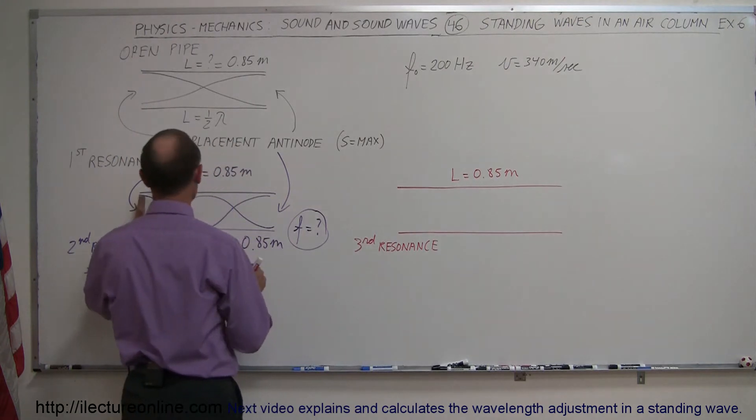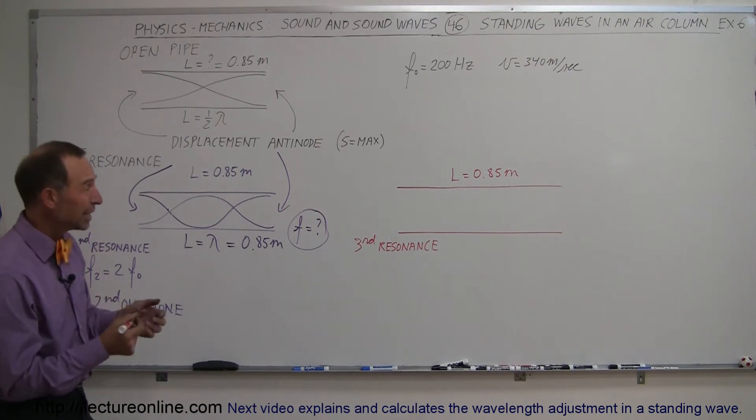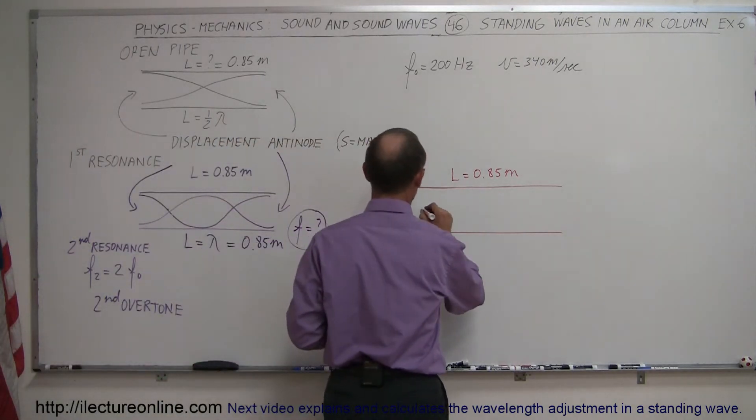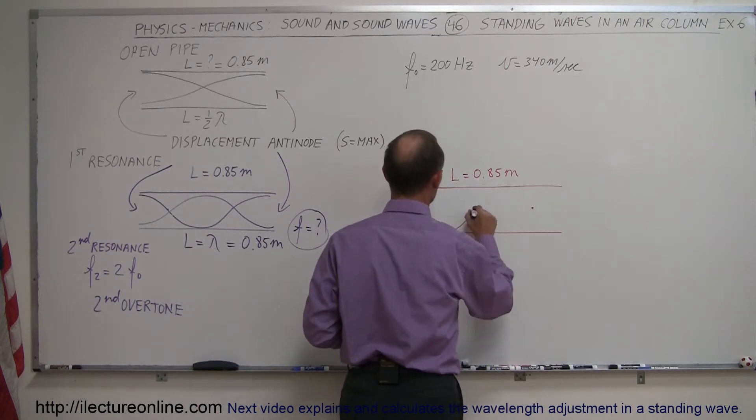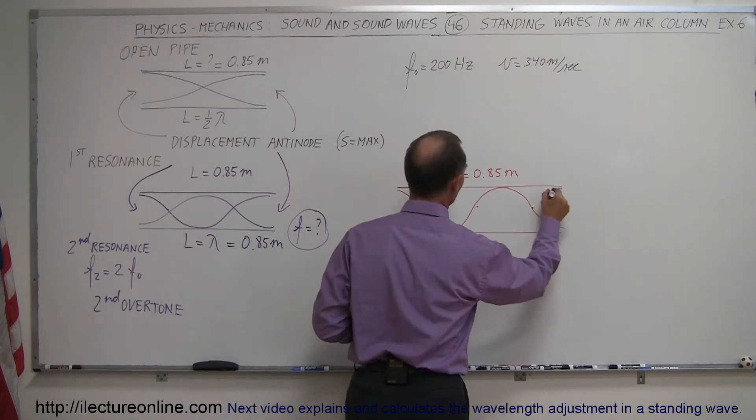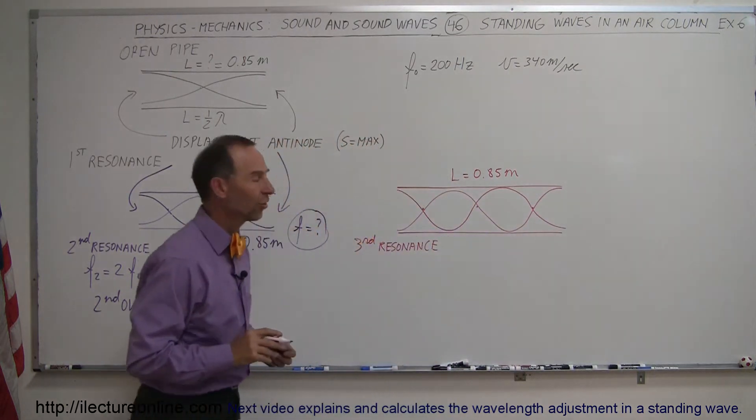Again, we have an antinode and an antinode, and two nodes in the middle for the second resonance. So for the third resonance, we're going to need three nodes in the middle. So one over here, one over there, and one in the middle. And if we then connect those with what this will have to look like, we now have ourselves a third resonance situation.